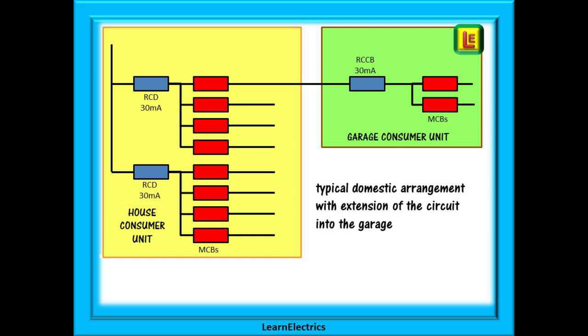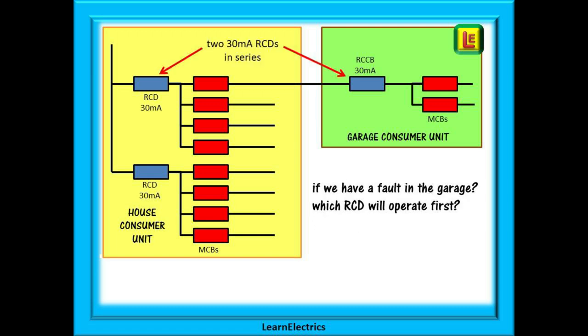If we look at a typical domestic installation a circuit has been taken from the consumer unit to the garage. At the garage a small two circuit consumer unit is installed. This contains a 30 milliamp RCCB and two MCBs. We now have two 30 milliamp RCD devices in series with each other one in the house and one in the garage.